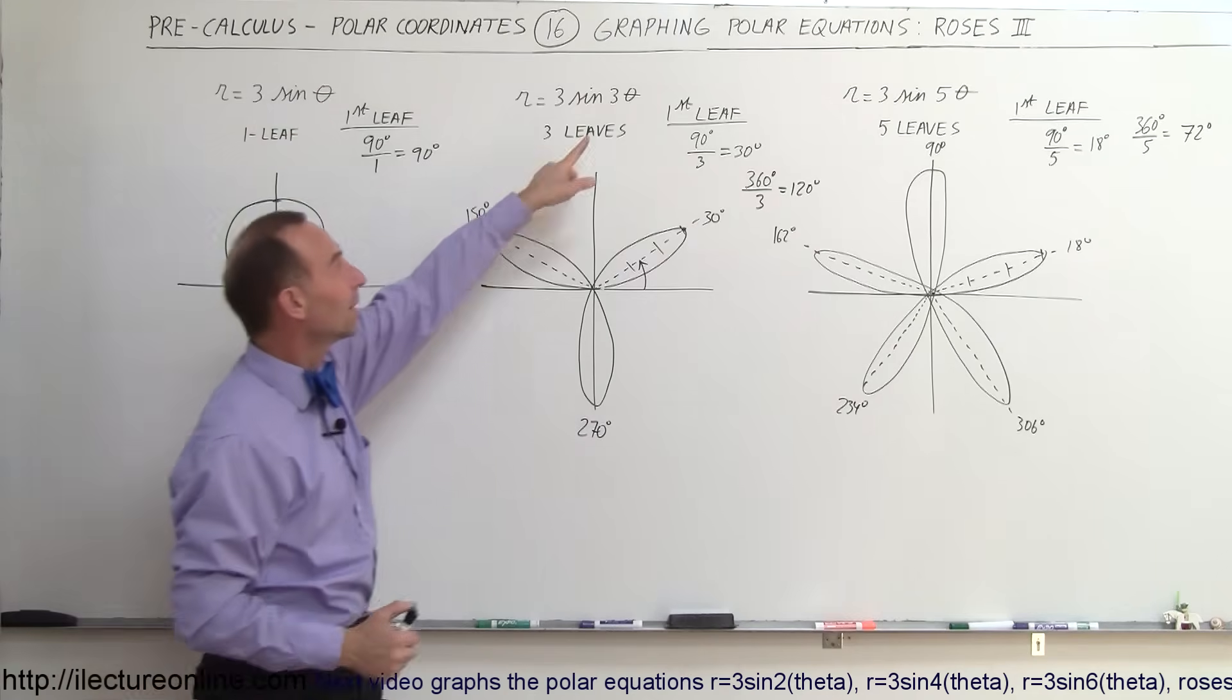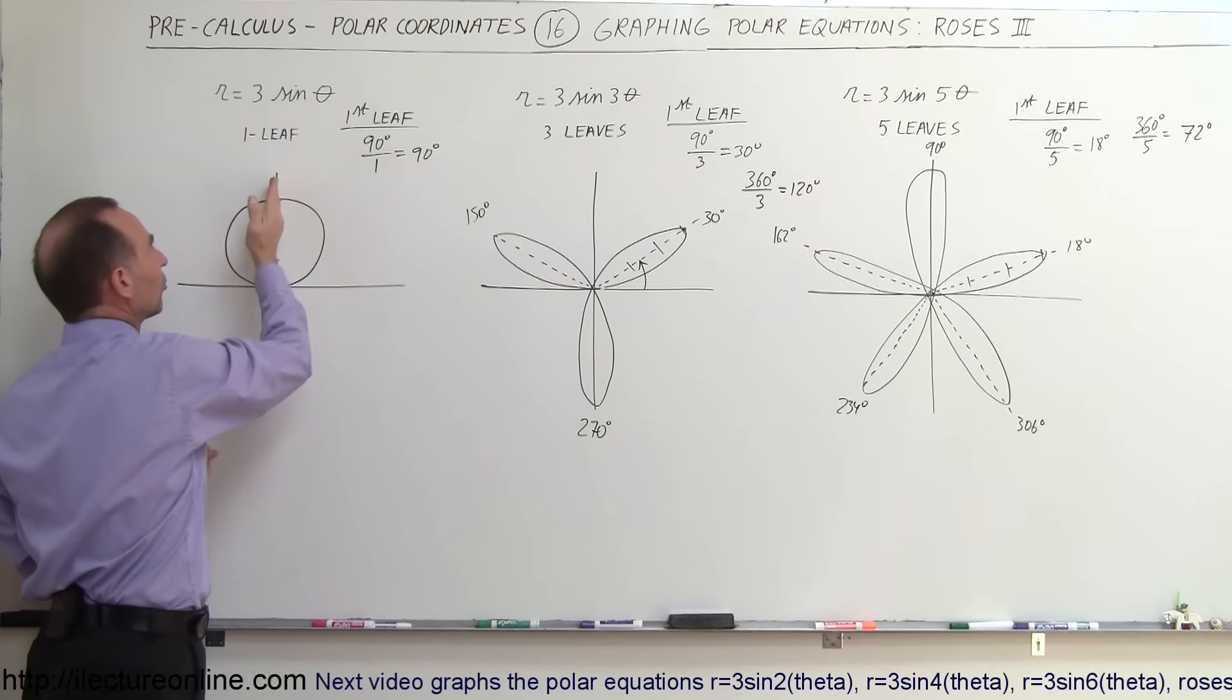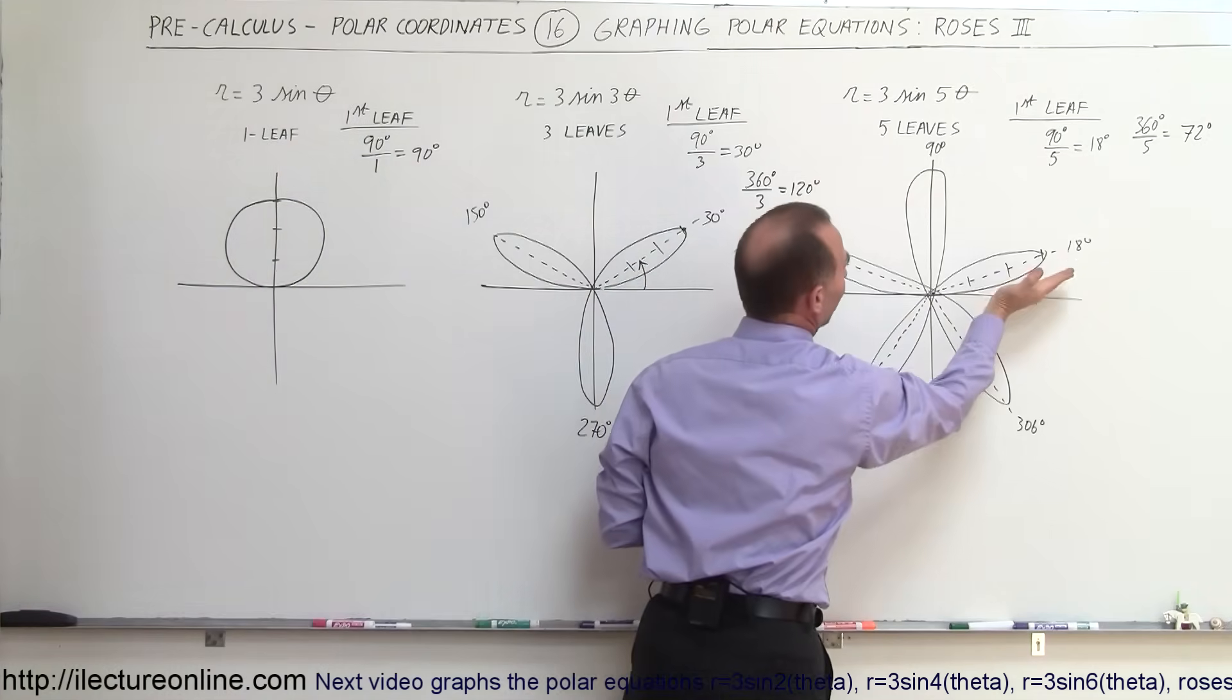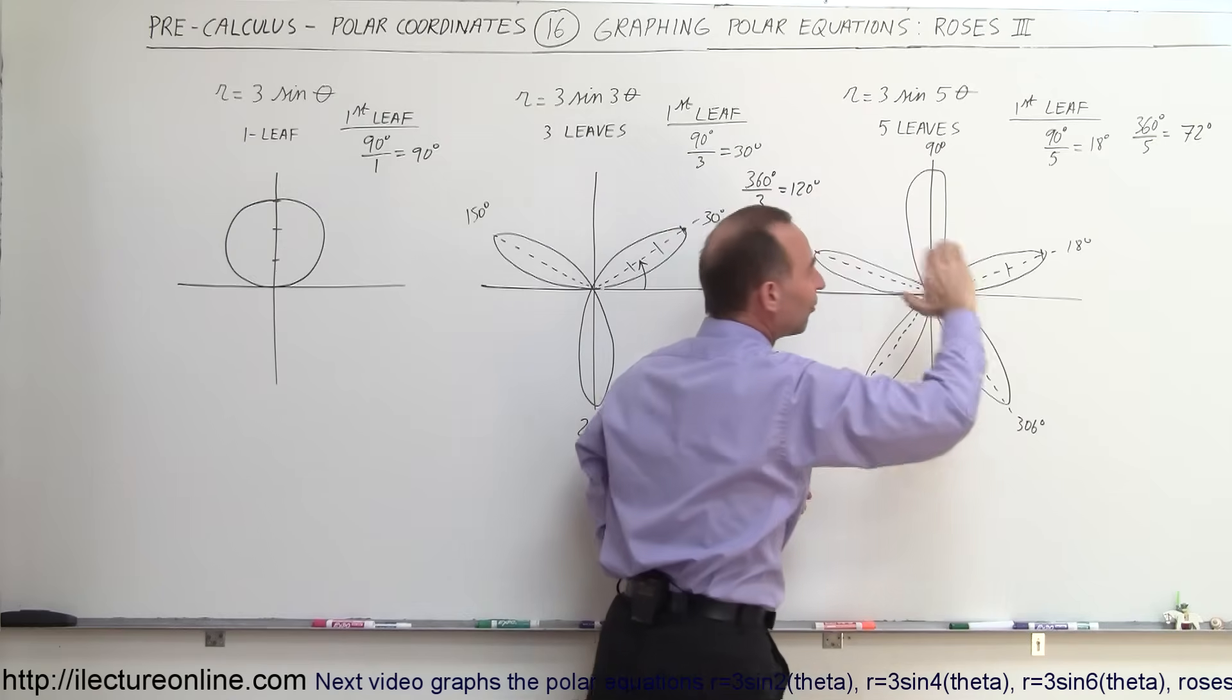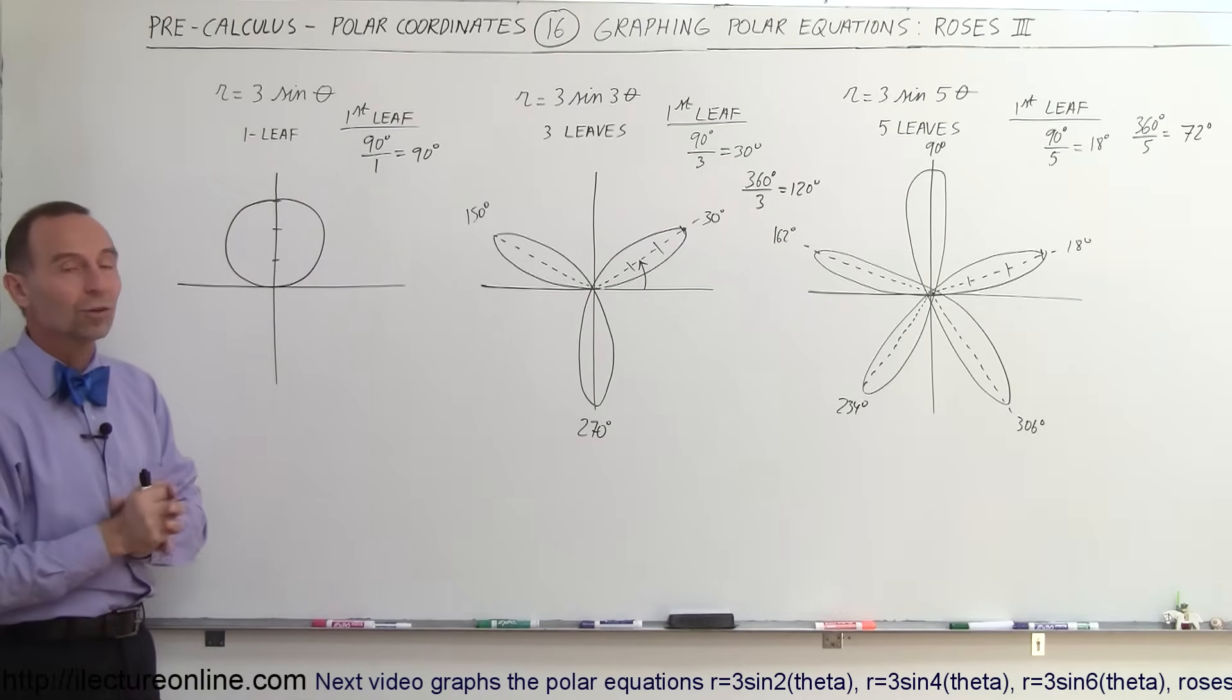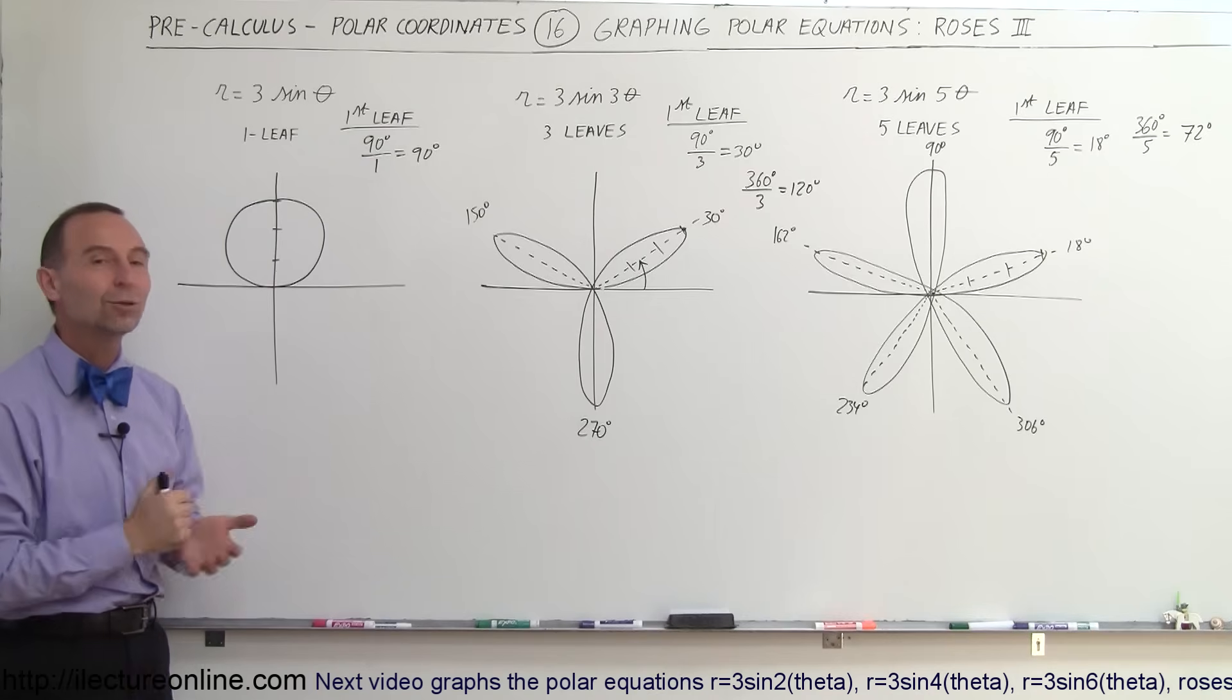And that's how we draw the odd functions: the 1 theta, 3 theta, 5 theta for the sine. Notice the first one starts at 90 degrees divided by the number from the angle. So it starts at 90, 90 divided by 3 is 30 degrees, 90 degrees divided by 5 is 18 degrees. And then you space them out by taking 360 degrees divided by the number you have here, because that's how you divide the space in angle between the number of leaves you're going to draw. Now in the next video, we'll draw the even functions.